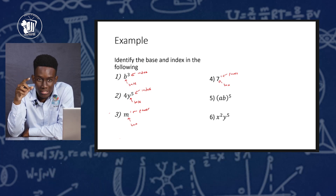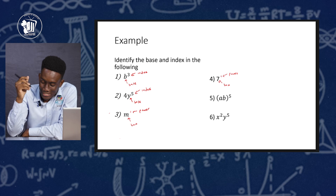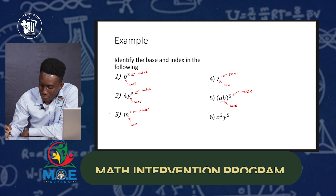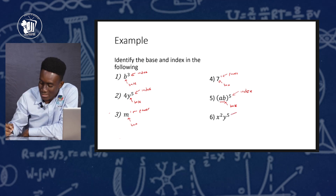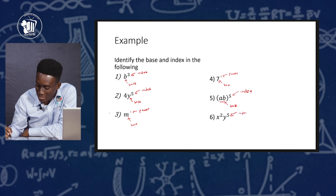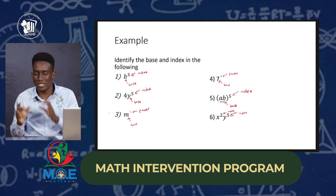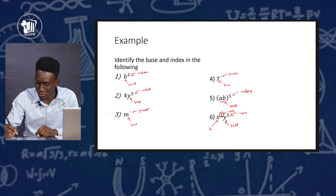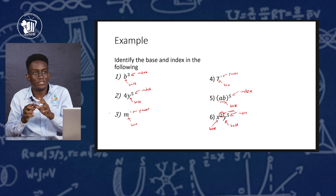Number five: we have (a, b) all raised to the fifth power. a, b is in a bracket and the entire a, b is being raised to the fifth power. The index would of course be 5, and the base will be the entire a, b. The last one: x raised to the second power, y raised to the fifth power. In this case we have two sets of indices. The base for the index 5 would be y, and the base for the index 2 would be x. Remember, the base is what is being raised to the power, so each index will have a base.